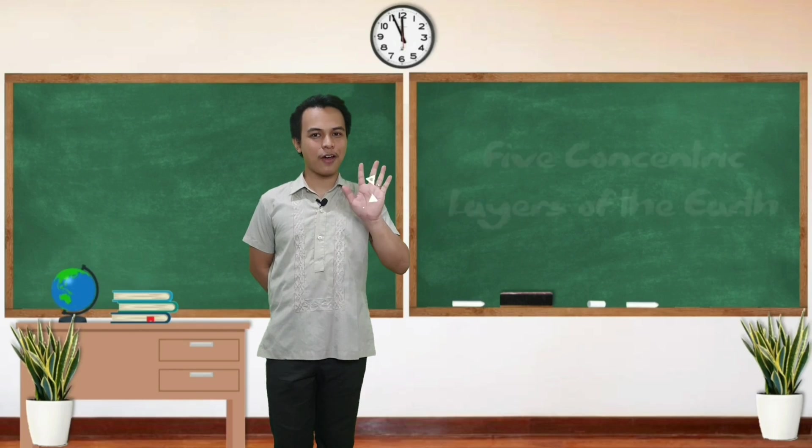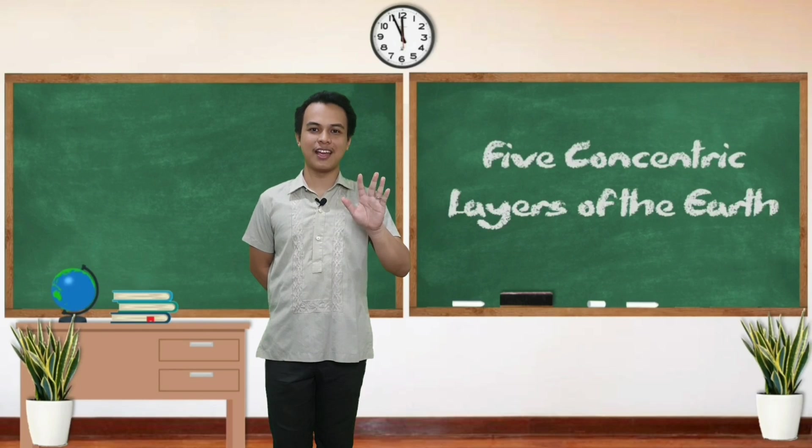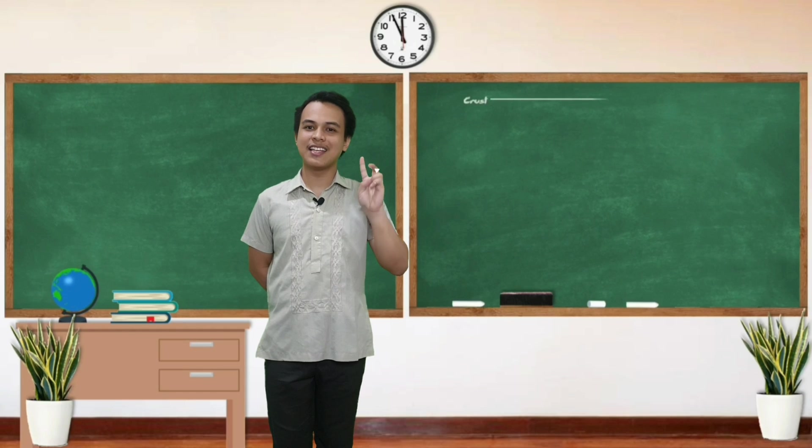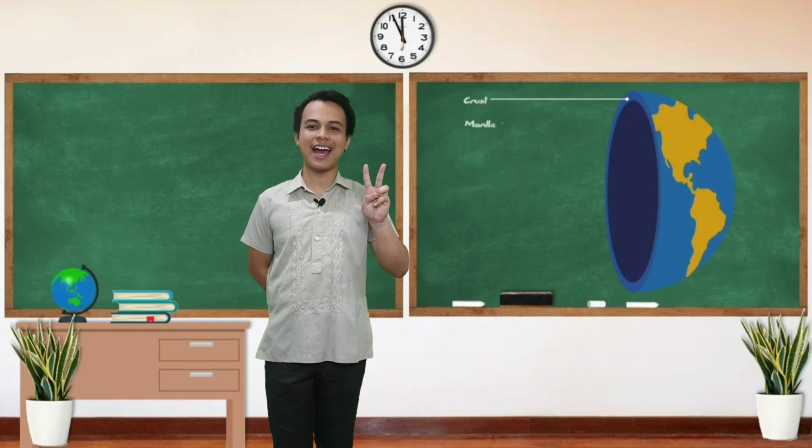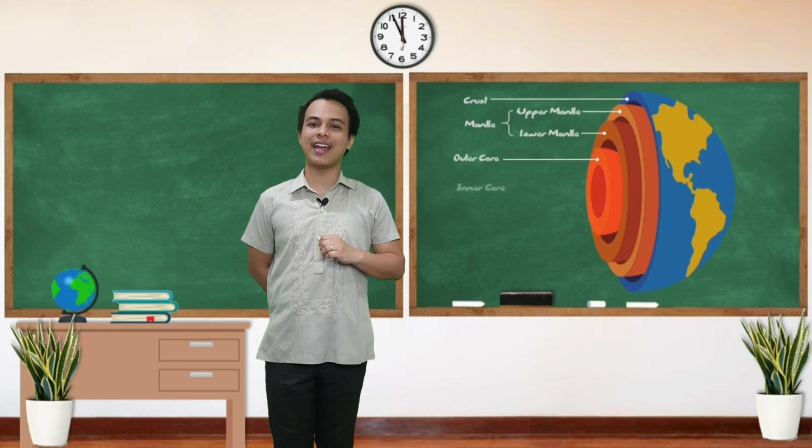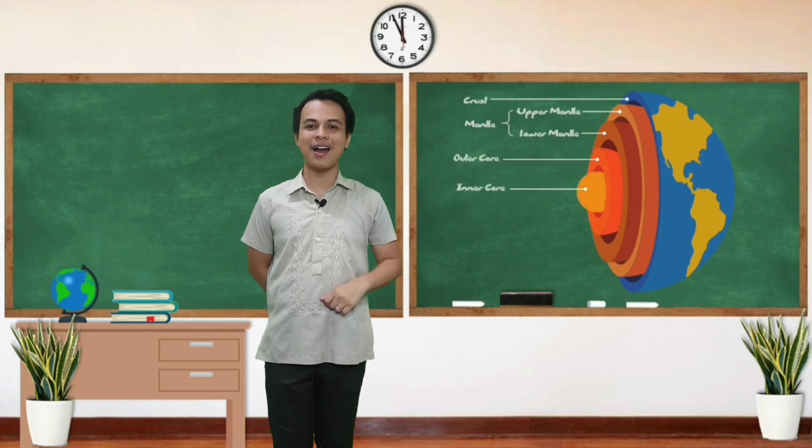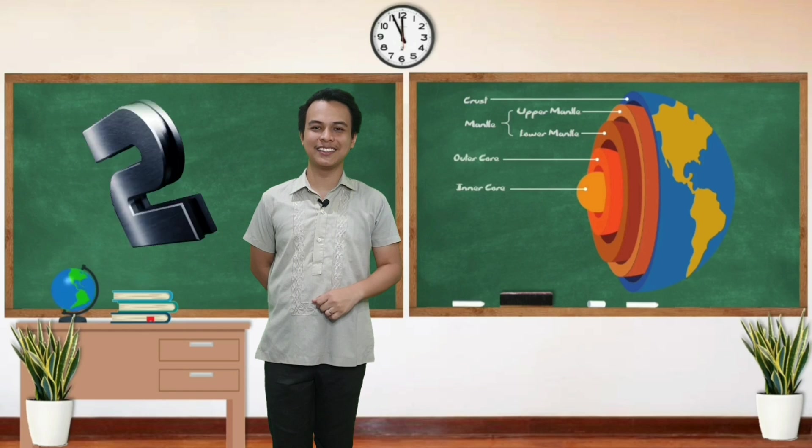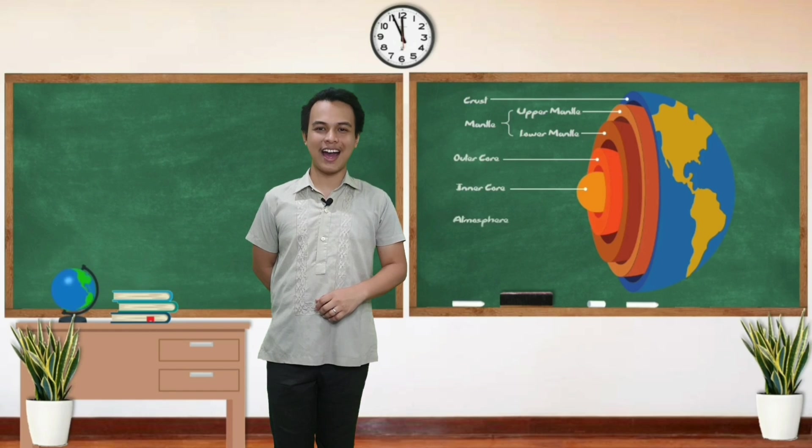For we all know, there are five concentric layers of the Earth. The first one is the crust. The second one is the mantle na nahati sa upper at lower na bahagi. Pangatlo ay ang outer core. Pangapat naman ay ang inner core. At ang panglima, mauhulaan nyo ba? Tama, ang ating atmosphere.